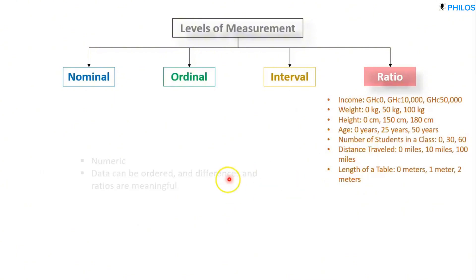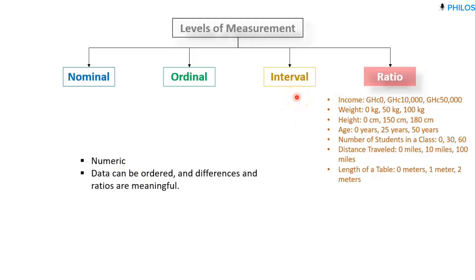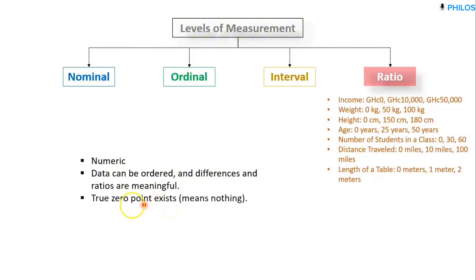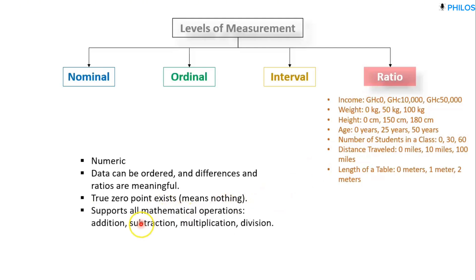Now let's look at the fourth level, which is ratio. For ratio level data, these are some examples. The first characteristic is it is numeric, just like interval — recall that nominal and ordinal are categorical while interval and ratio are numeric. Ratio data can also be ordered, and the differences and ratios are meaningful. Someone earning more in Ghanaian cedis earns more than one earning 10,000 cedis, and something that weighs 100 kg is heavier than something that weighs 50 kg. Another characteristic is a true zero point — zero means nothing. If someone says their monthly income is zero cedis, it means the person earns nothing that month.